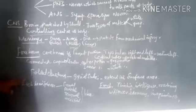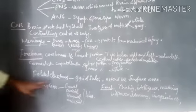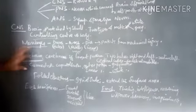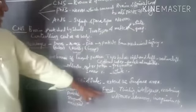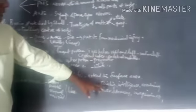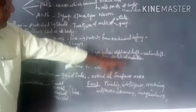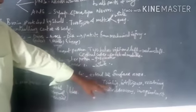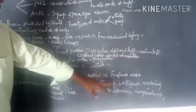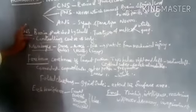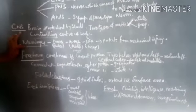The two hemispheres each have these four lobes. The functions of the cerebrum include thinking, intelligence, reasoning, willpower, memory, and imagination. It is an important portion of the brain.